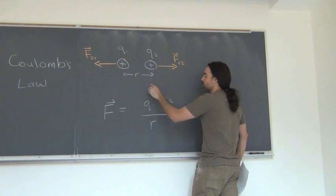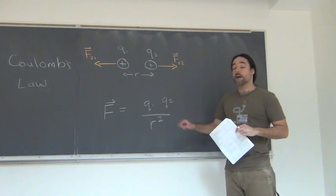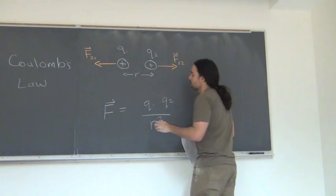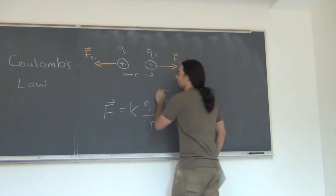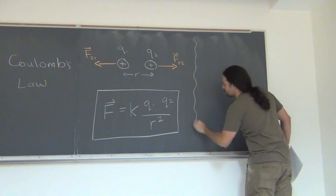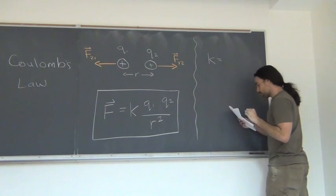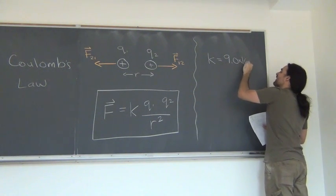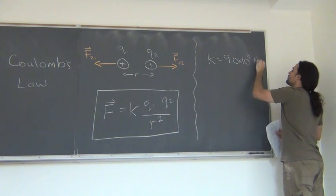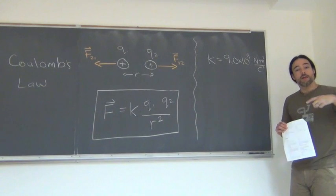The force between charges depends on distance as one over r squared, so as r gets bigger the force gets smaller. Working out the units, we get coulombs squared over meters squared, which doesn't give us the right units for force. So we need to include a constant k, which equals 9.0 times 10 to the 9, with units of newton·meters squared per coulombs squared. That cancels the coulombs squared and meters squared, leaving us with newtons.